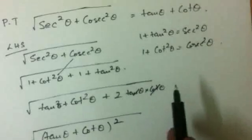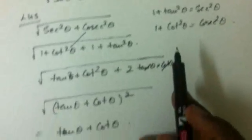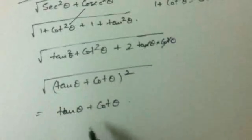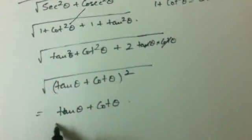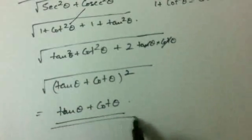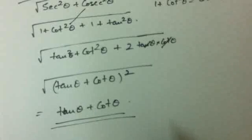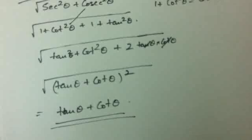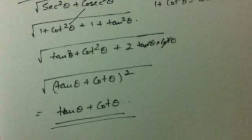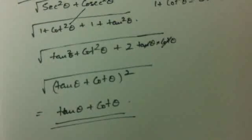That's what the right hand side is. So here we have proved that square root of secant squared theta plus cosecant squared theta is equal to tan theta plus cot theta. Thank you everyone. This is Oni from MetaMagic signing off. See you in the next video.